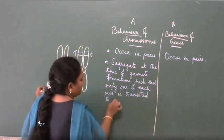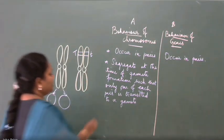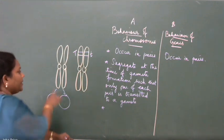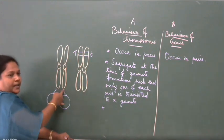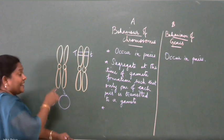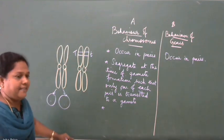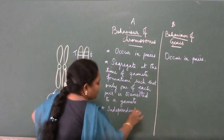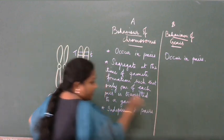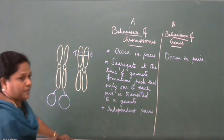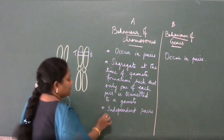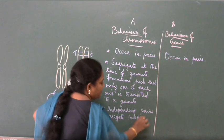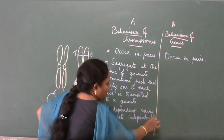The third point: independent pairs. They are independent. Independent pairs segregate independently of each other — they don't blend. You have to be precise with the statement and the terms as in your textbook. Independent pairs segregate independently of each other.